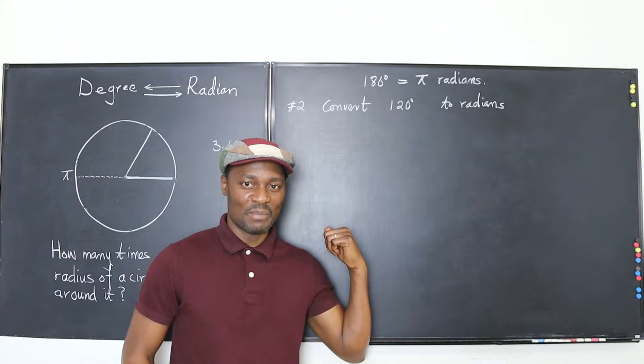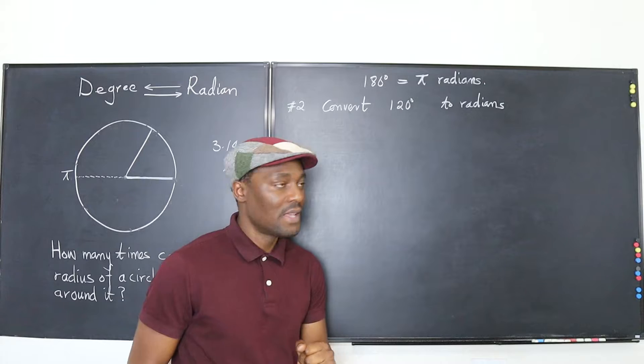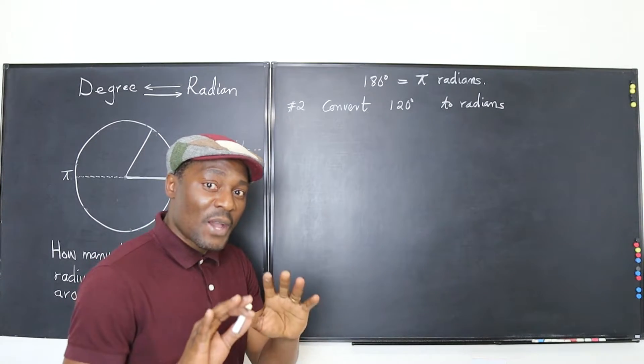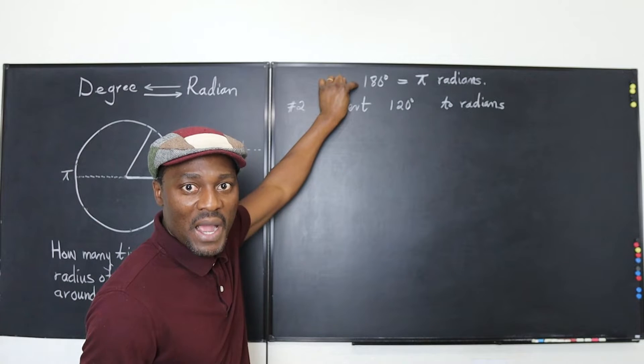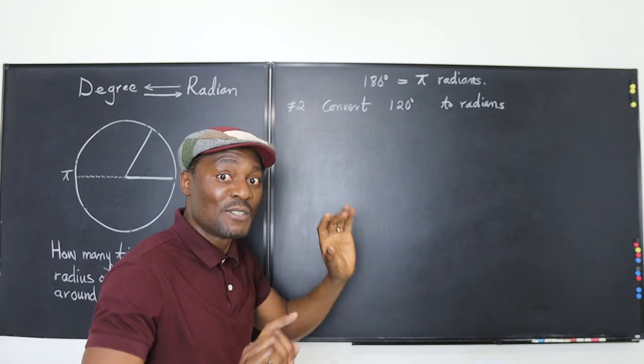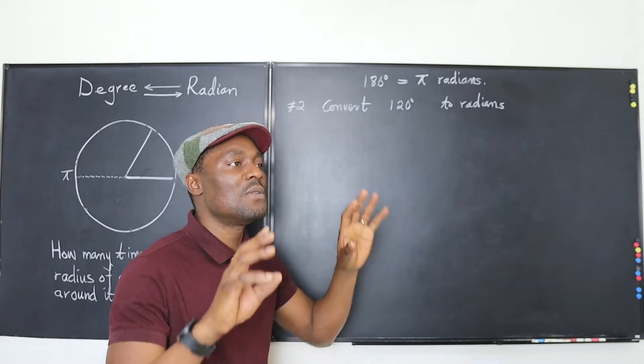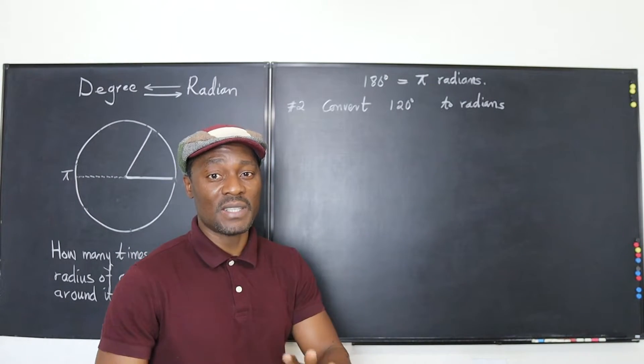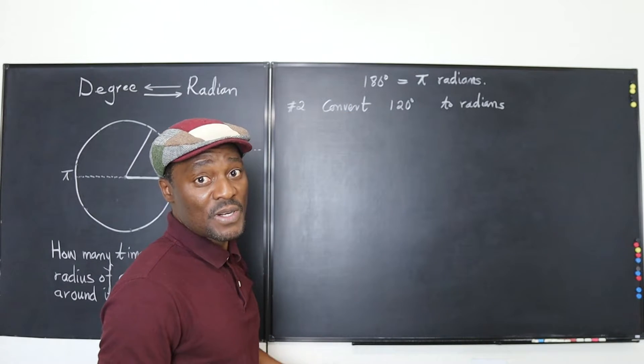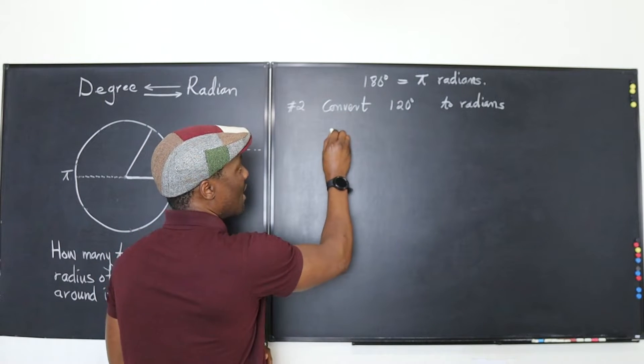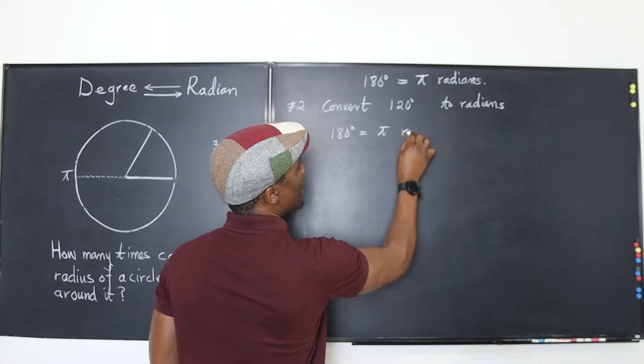So this is the first example. Convert 120 degrees to radians. Now remember that all you need to remember all the time is 180 degrees is pi radians. 180 degrees is pi radians. And this is how I say it. Some people have the formula telling you multiply by this and some students have a hard time remembering that. But if I remember this I know where to go from here. So what I tell myself is 180 degrees equals pi radians.